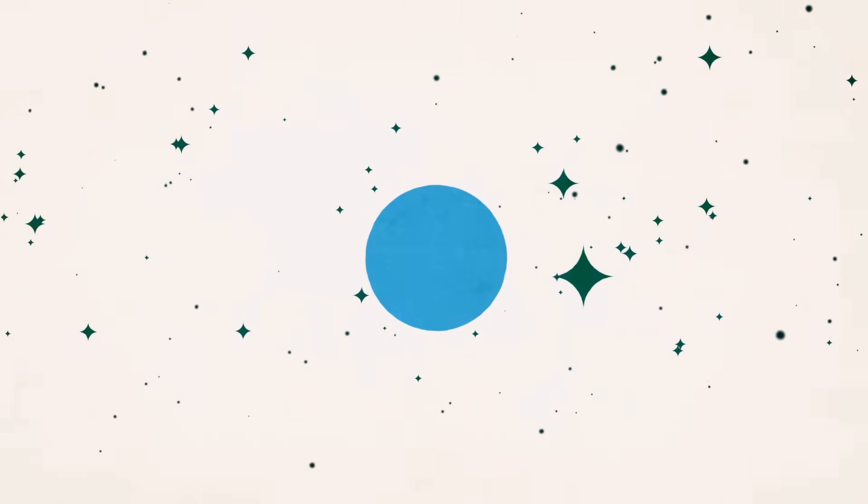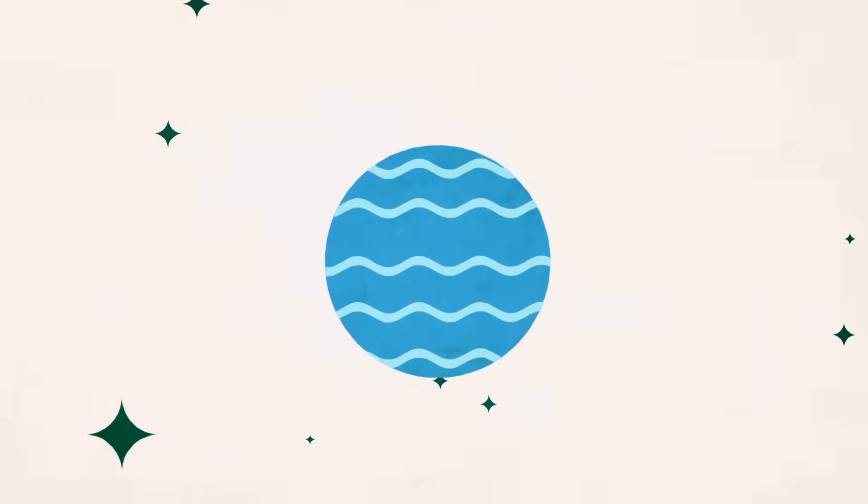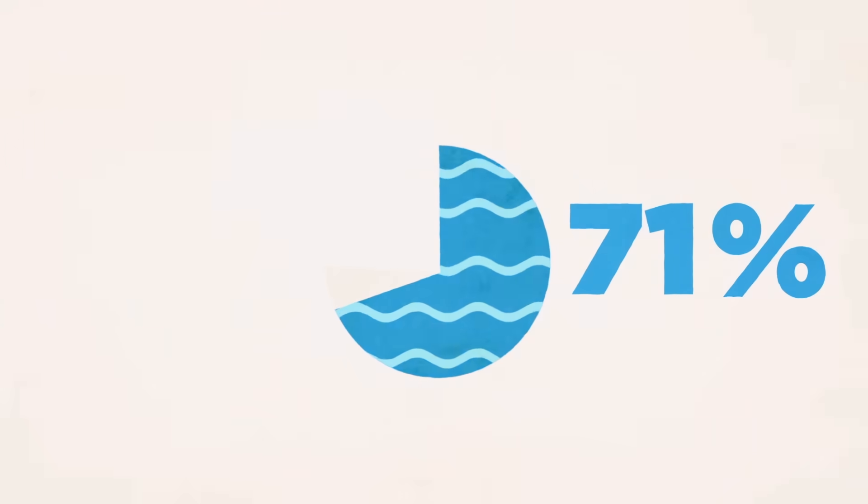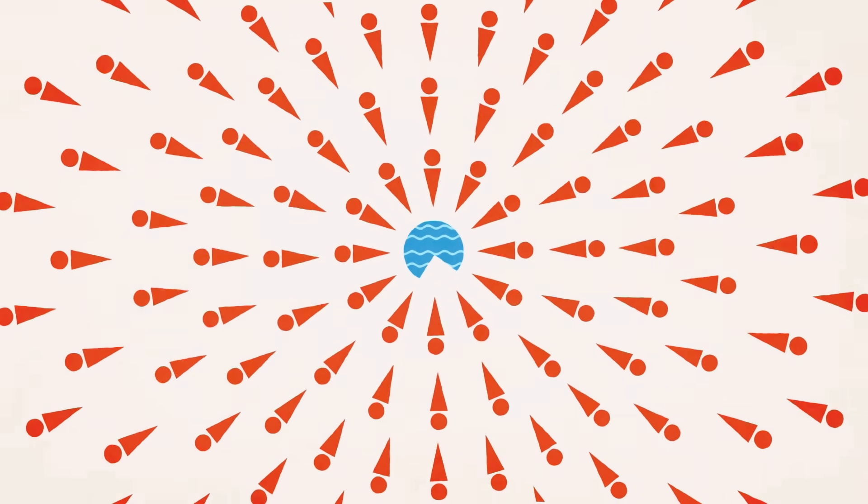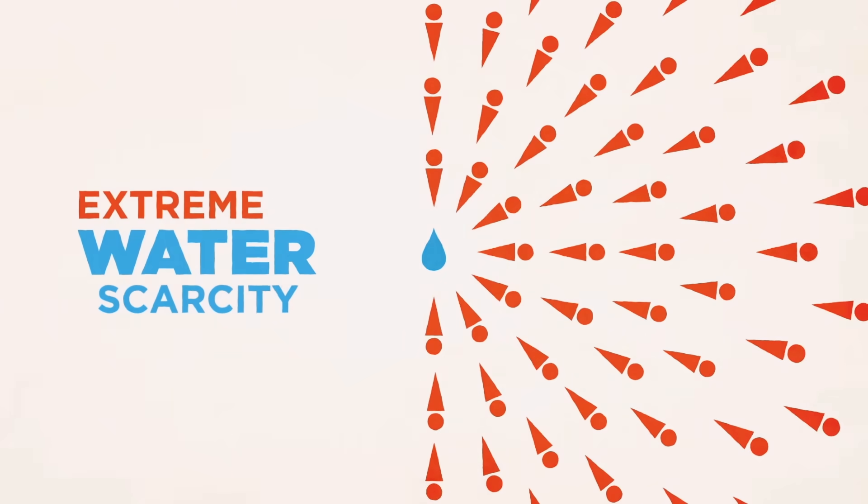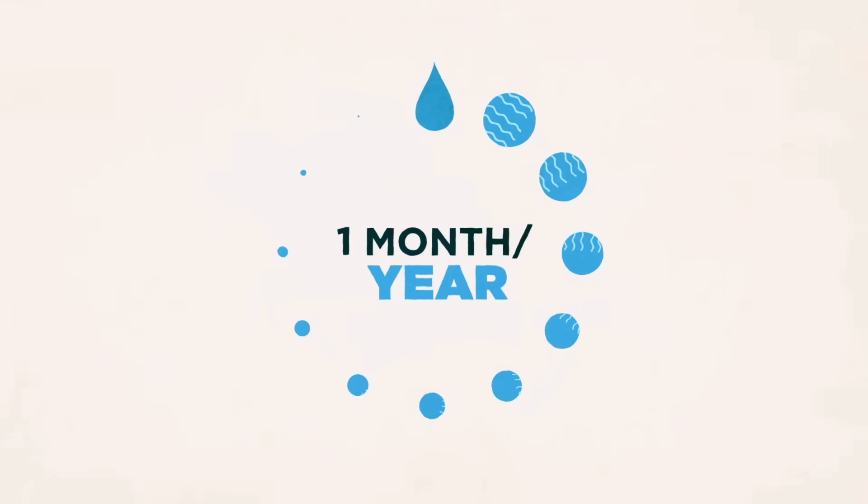From space, our planet appears to be more ocean than Earth. But despite the water covering 71% of the planet's surface, more than half the world's population endures extreme water scarcity for at least one month a year.